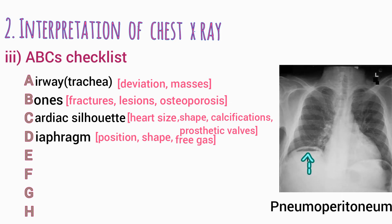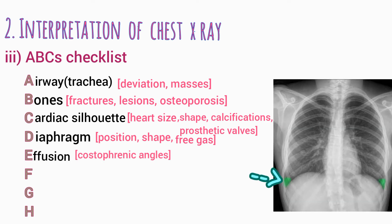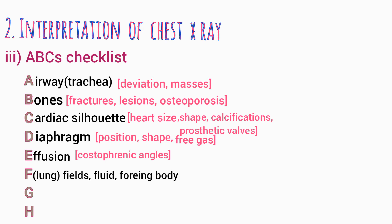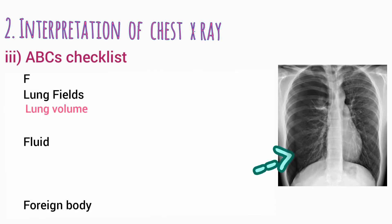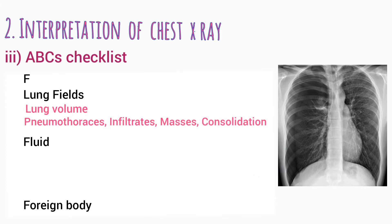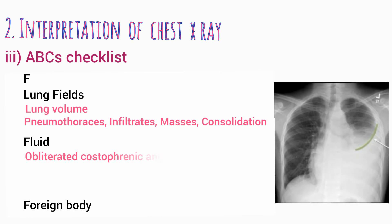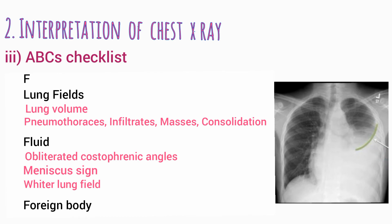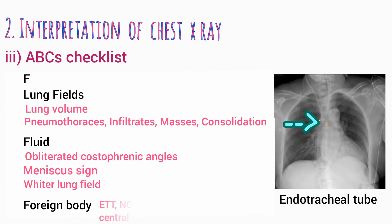Look below the diaphragm for free gas. E is for effusion — always check the costophrenic angles for sharpness, as blunted angles may indicate small effusions. F is for fields, fluid, and foreign body. In the lung fields, check lung volume and look for pneumothorax, infiltrates, masses, and consolidation. Fluid can be indicated by obliterated costophrenic angles, meniscus sign, and a wider lung field. Also check the position of foreign bodies such as endotracheal tube, nasogastric tube, pacemaker leads, and central venous lines.